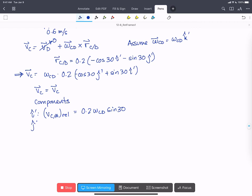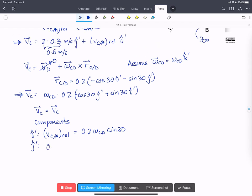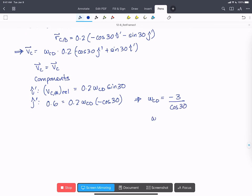We still have two unknowns in there, we'll have to leave that for a second. And in j-hat prime, we've got 0.6 meters per second equals 0.2 omega CD times minus cos 30. So we solve this, omega CD equals minus 3 divided by cos 30. And then we can find the vector omega CD is going to be minus 3 divided by cos 30 in the k-hat prime direction.